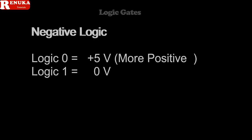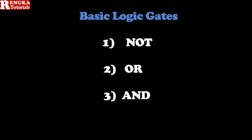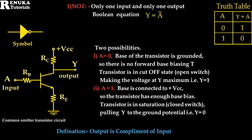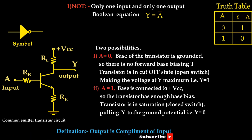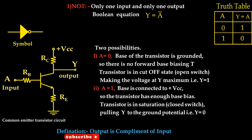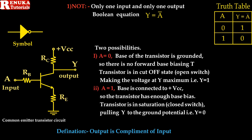Now back to logic gates. There are three types of basic gates. The first one is the NOT gate. It has only one input and only one output. If A is considered as an input, the output is given by the Boolean equation Y equal to A complement. This logic circuit of the NOT gate can be constructed using a simple common emitter transistor circuit as shown in the figure.